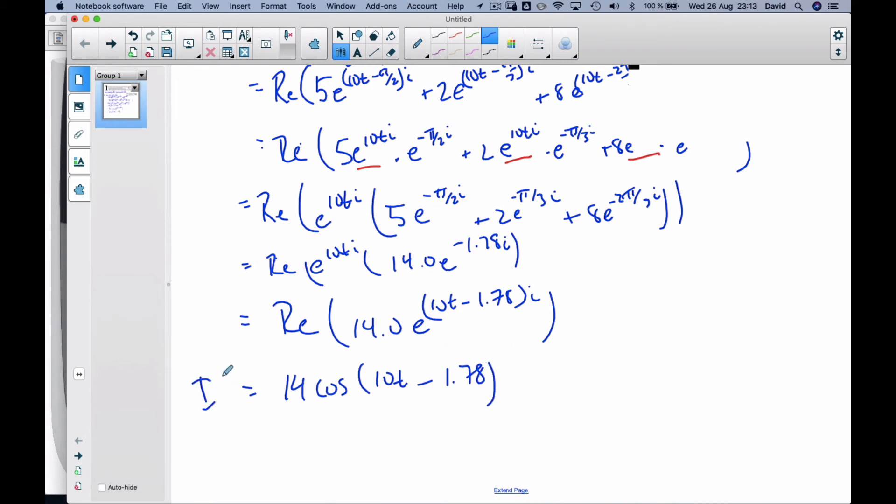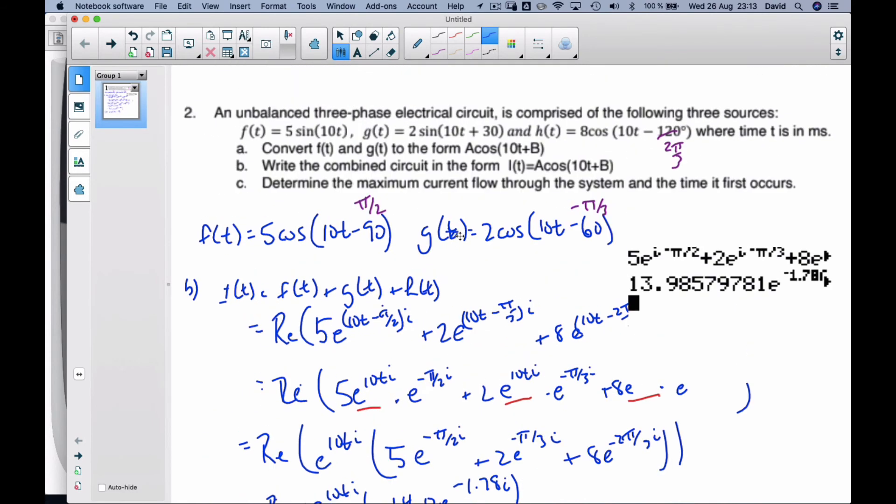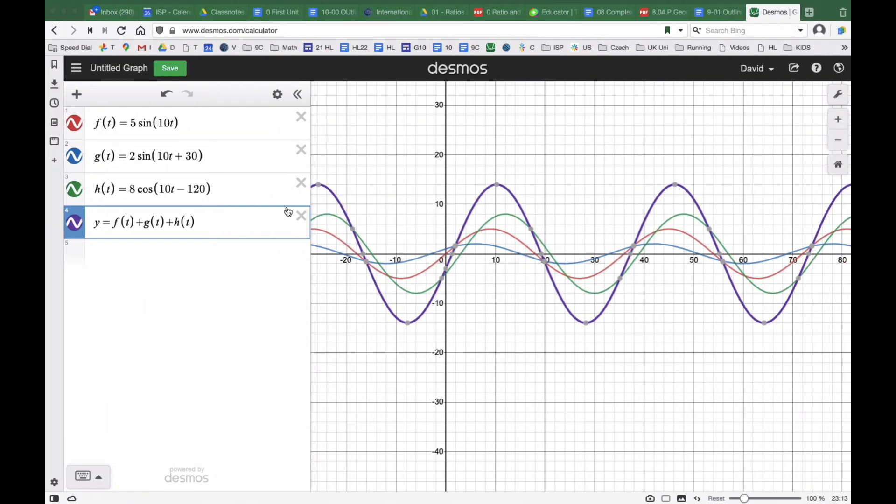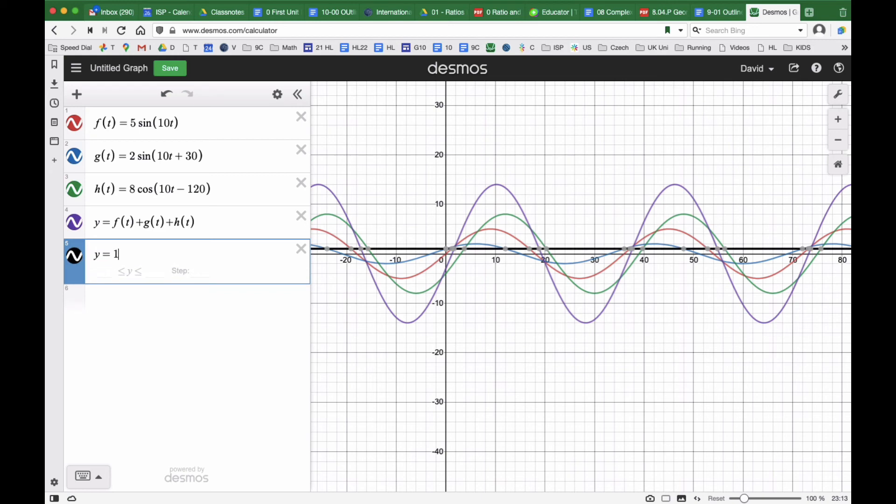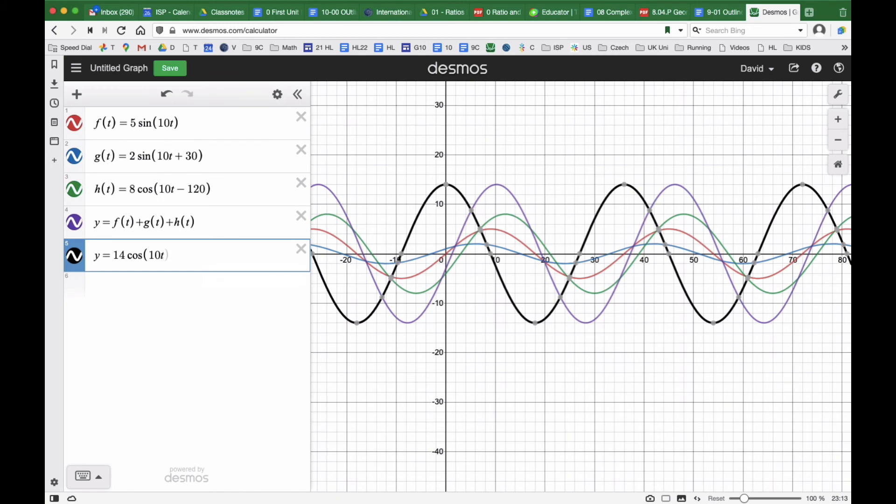So this is i in terms of cosine(10ti + b). If I type that into my graph here, y = 14 cosine(10ti - 1.78). Now that's in radians.